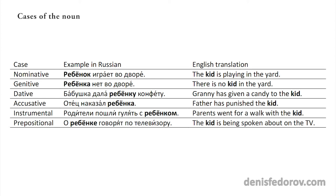We see here that in English the word 'kid' stays the same in every case, but in Russian the word ребёнок changes its ending. That is the main difference between Russian and English, because Russian uses endings changing as the main instrument of connecting words in sentences. Cases, genders, and forms of the word play the decisive role in this process.